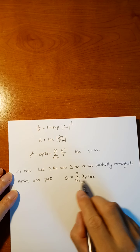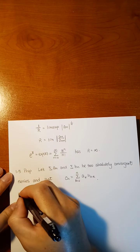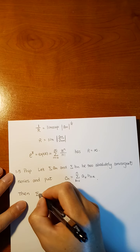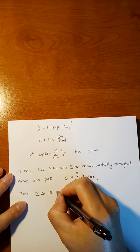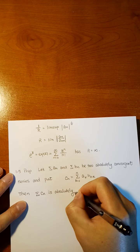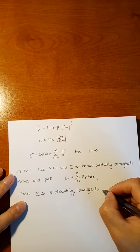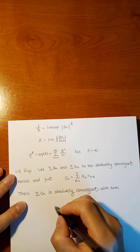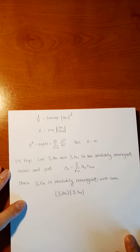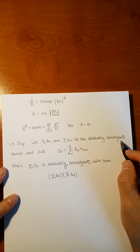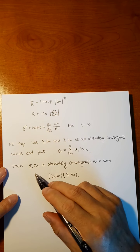So c_n is defined with k from 0 to n. Then the new series c_n is absolutely convergent. This proposition tells us that for two absolutely converging series, you can compute the product of them as another new series, and this new series has a term like c_n.